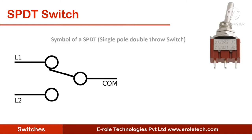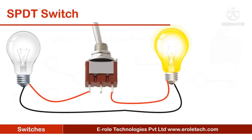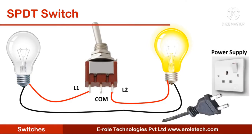This switch has three pins. The middle pin is called the common pin. To use this switch, its lever is pushed left or right. When its lever is pushed to the right, the common pin connects internally to the left pin, and when the lever is pushed to the left, the common pin connects to the right pin.